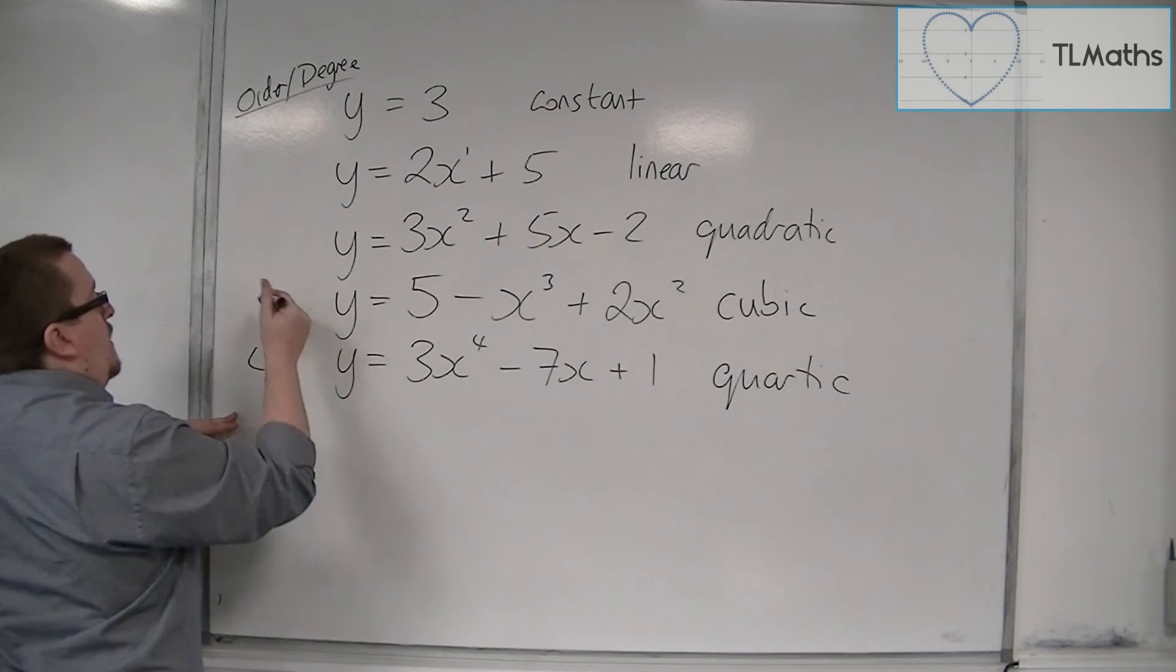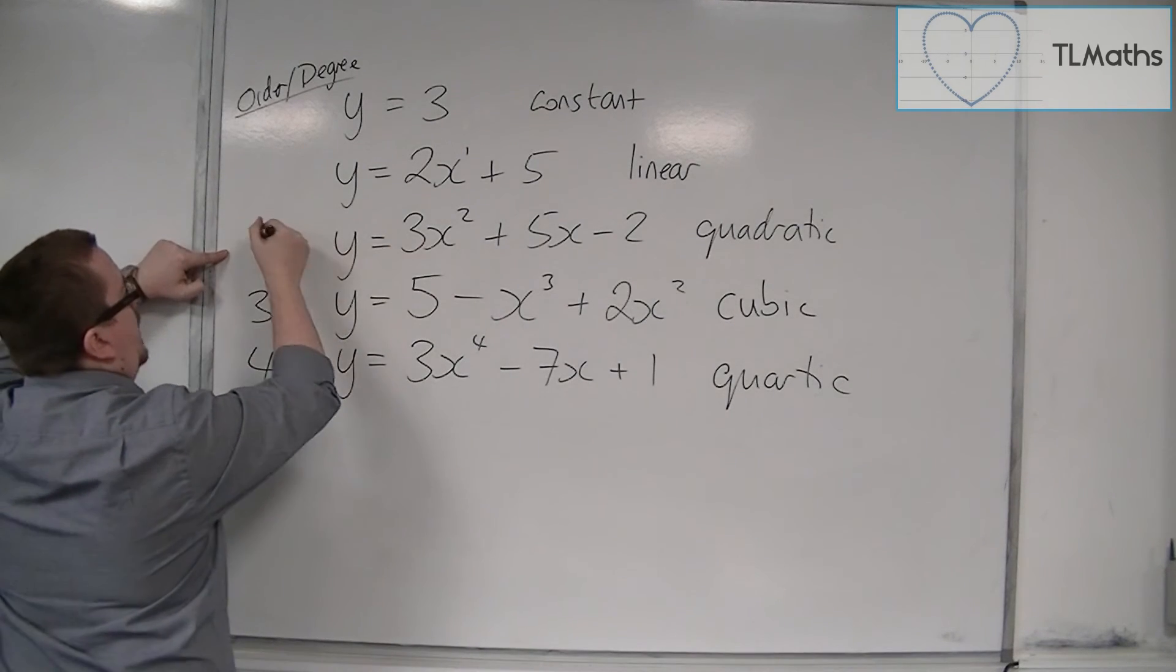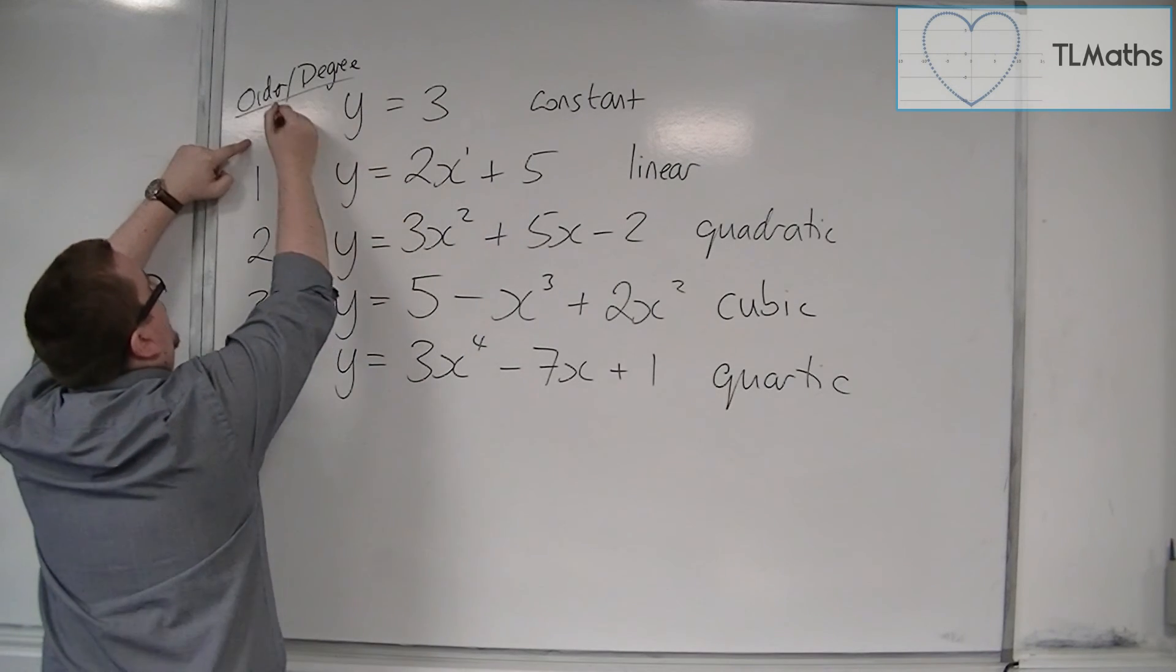Here, it was 3, so the largest power of x. Here, the order is 2. Here, it would be 1, and here it would be 0.